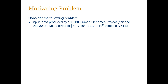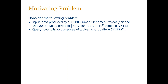As a motivation for this research, consider the following problem. The 100,000 Human Genome Project is a research project that involves obtaining a complete genome of 100,000 people to study various genetic diseases. This project has recently been finished, and since a human genome consists of about 3.2 billion symbols, the size of this dataset — assuming each symbol is encoded using two bits — is around 75 terabytes.